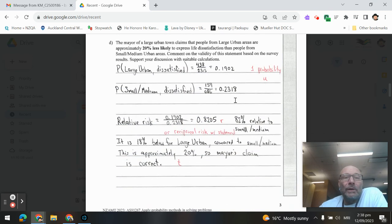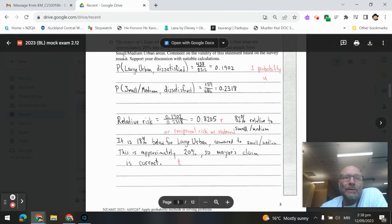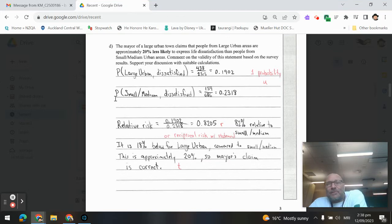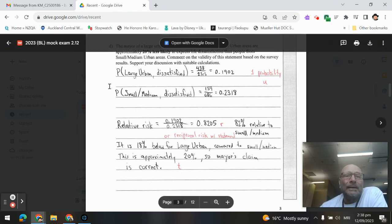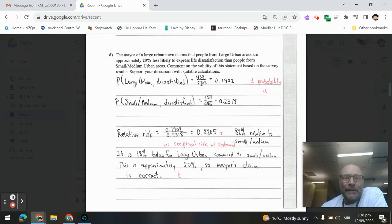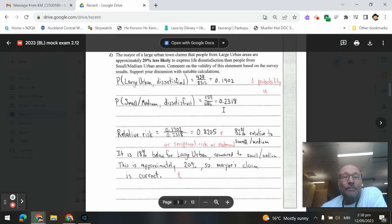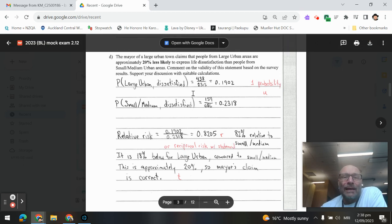Next, the mayor of a large urban town claims that people from large urban areas are approximately 20% less likely to express life dissatisfaction than people from small, medium urban areas. Comment on the validity. First thing we need there, we're going to need the probability that you are dissatisfied from a large urban area, right here. We're going to compare that to the probability of being dissatisfied from a small or medium urban area. Now, the way the question is worded, that's how you're going to set up your fractions. People from large urban areas approximately 20% less likely compared to those from the smaller medium.